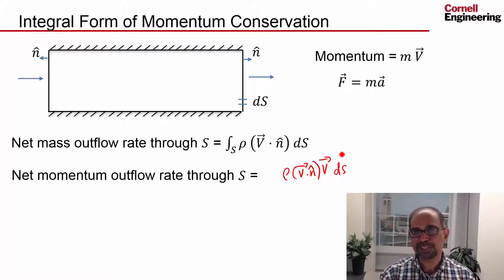If you do this rigorously you can say that is right. I'm doing it by analogy here, and then if I integrate it over this entire control surface I will get the net momentum outflow rate through that surface.